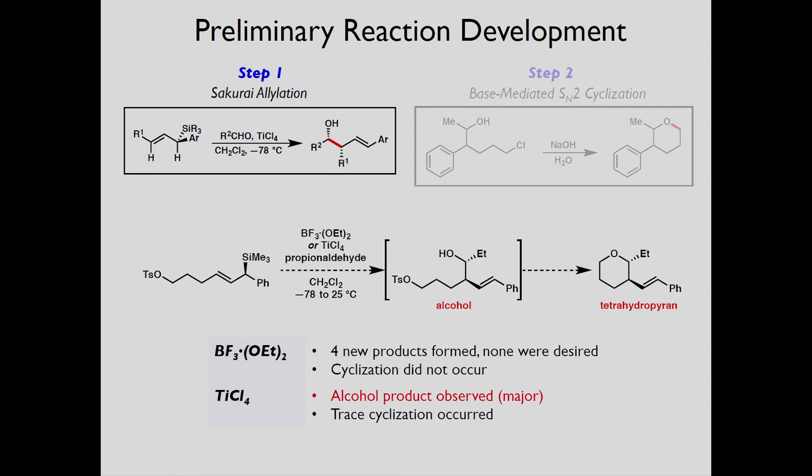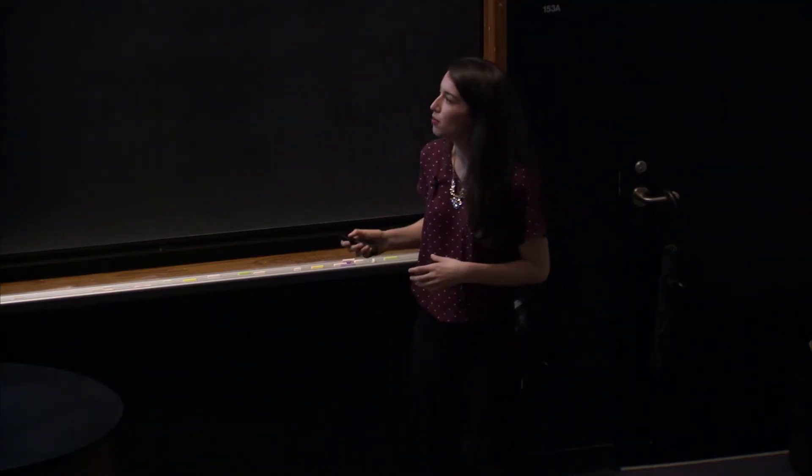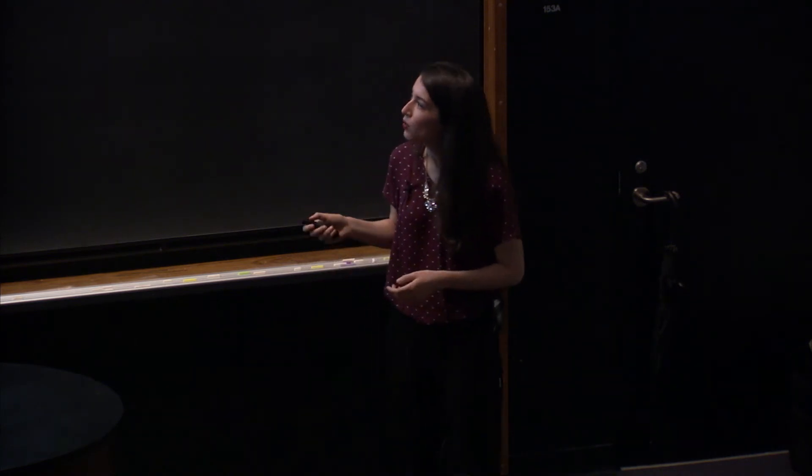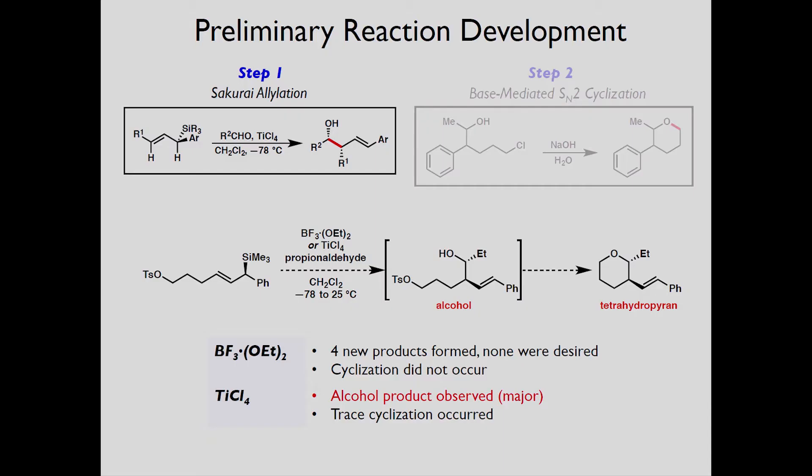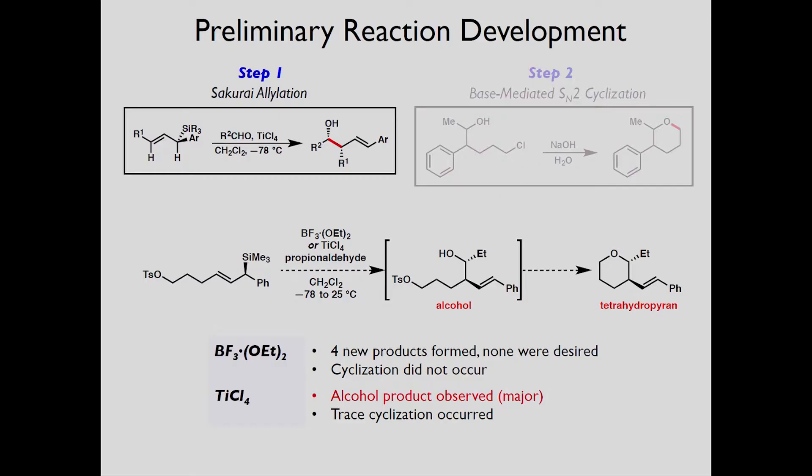So we looked at the first step. The Sakurai allylation is initiated by using a Lewis acid. There are two very common Lewis acids used in the lab, BF3 etherate and titanium tetrachloride, and we decided to expose our allylation material to both of these Lewis acids. BF3 etherate consumed all the starting material but we got no cyclic products from this Lewis acid and we didn't even get the predicted alcohol intermediate. So then we moved on to titanium tetrachloride. Again all the starting material was consumed so a reaction was occurring. Unfortunately only trace cyclization occurred and the major product was actually the alcohol product.